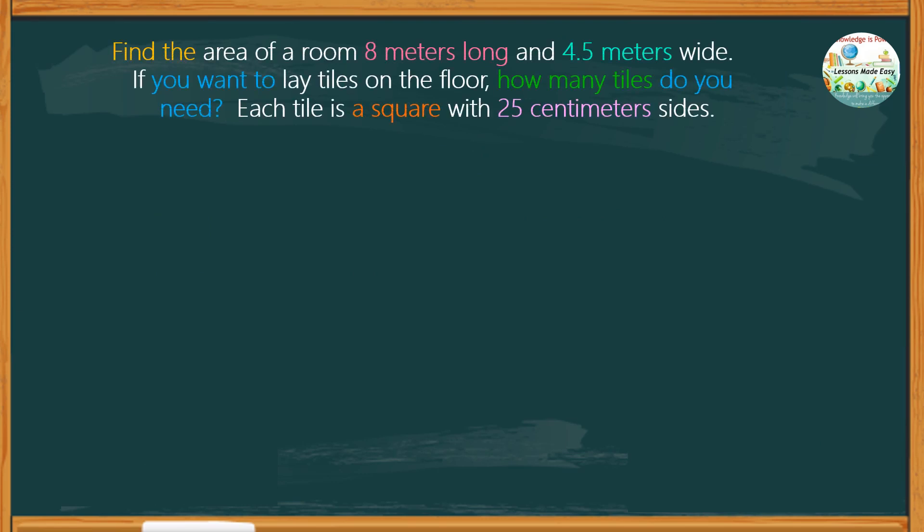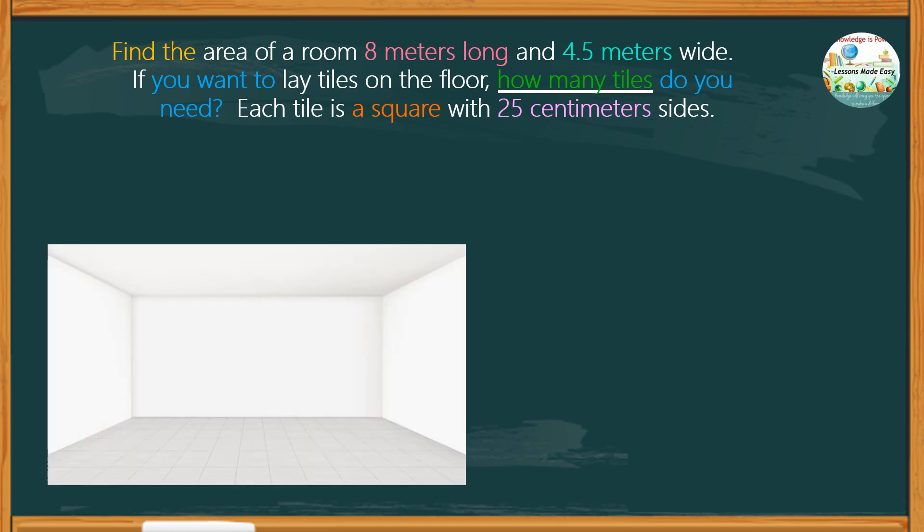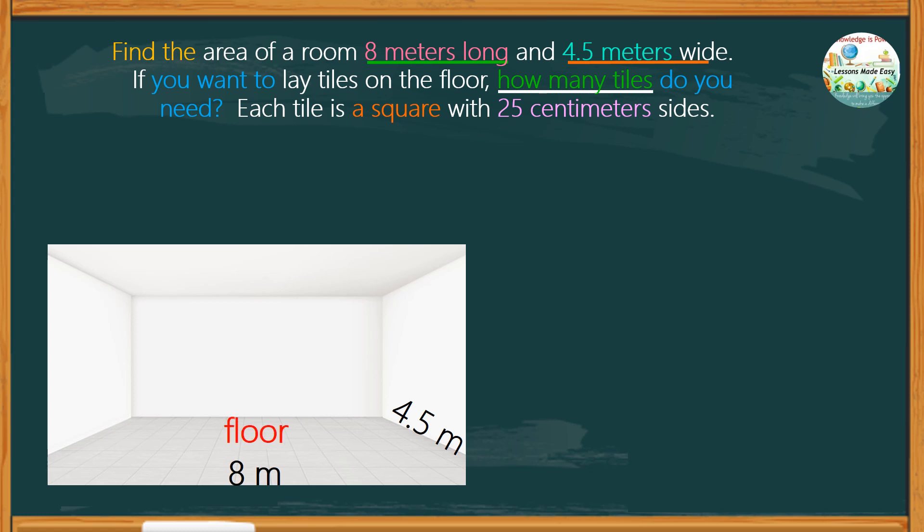Let's analyze the given problem. The question is, how many tiles do we need to lay on the floor? Given in the problem are the measurements of 8 meters long and 4.5 meters wide, which refers to the length and the width of the floor that we need to lay tiles on.